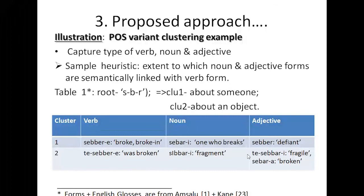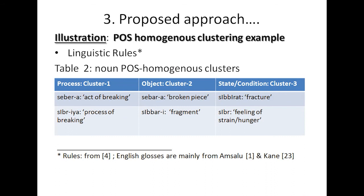As an illustration using Amharic, rules are taken from Bender and Fløss, and root corpora also from Gasser and Fløss. The approach focuses on verbs, nouns, and adjectives derived from verbs — excluding simple nouns, adjectives, and adverbs as they are less productive. A post-variant cluster example for the root 'sabbar' shows forms meaning 'broke,' 'one who breaks,' and other derived forms, drawn from the Amsalu and Ken dictionary. For part-of-speech homogeneous clustering, linguistic rules from Baye are used to group process nouns, object nouns, and state nouns of the same root.